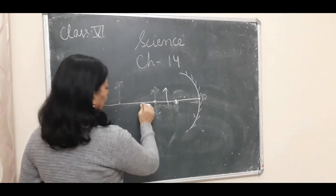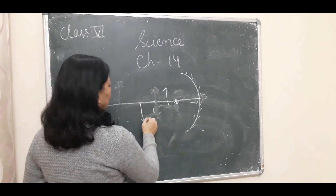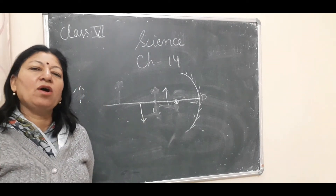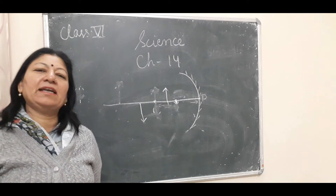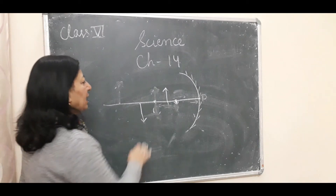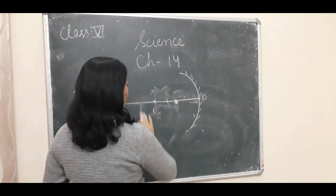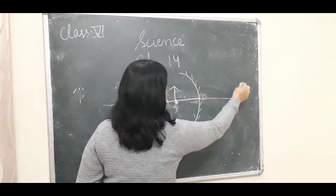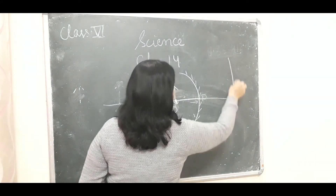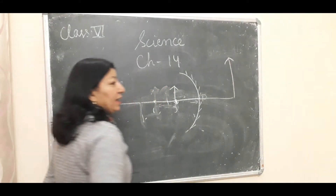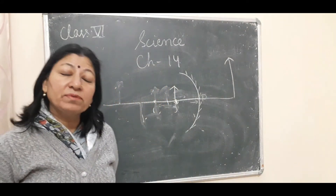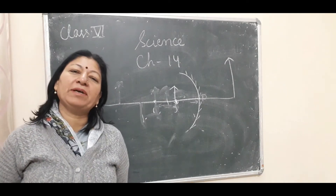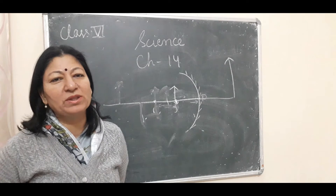When the object is placed between the focus and the center of curvature, the image becomes enlarged — larger than the object — and is inverted. When the object is placed between the pole and the focus, the image is erect and virtual.